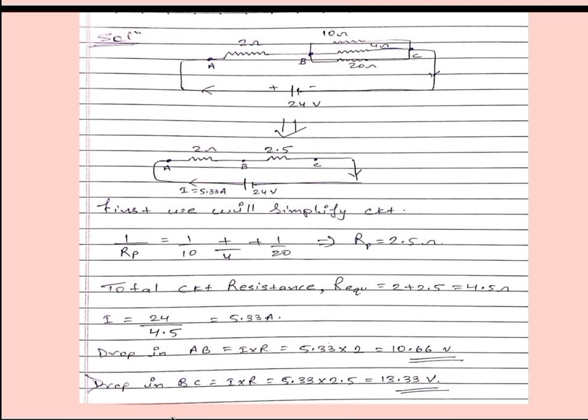Drop in BC is equal to I into R. Here R is equal to 2.5 ohm. After calculating, 13.33 volt. So these two are our answers. Thank you guys for watching. Share and subscribe my channel for more and keep supporting.